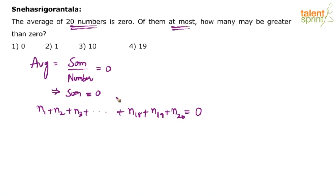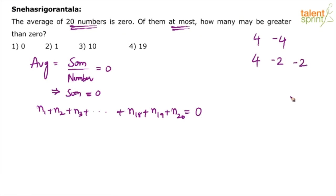For example, let's say two numbers are 4 and minus 4. What is the average? Zero, because sum is 0. Or if there are three numbers: one number is 4, another is minus 2, and the third is also minus 2. Here also the average is 0 because two numbers are negative and one is positive.